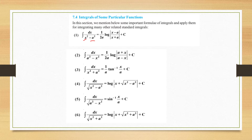Now let us look at these three formulas in the form with a root. If instead of 1/(x² − a²) we have 1/√(x² − a²), the formula is log|x + √(x² − a²)| + C. For 1/√(a² − x²), the formula is sin⁻¹(x/a) + C. And for 1/√(x² + a²), it is log|x + √(x² + a²)| + C.